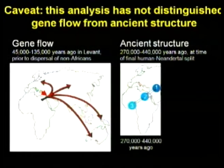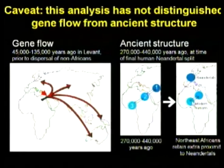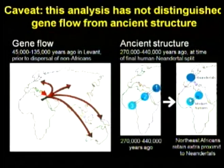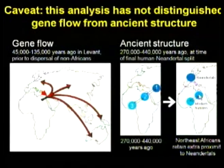And then what happened is population one went off and became Neanderthals a few hundred thousand years later. And populations two and three continued to exchange genes and then evolved into modern humans. But population two retained a little bit of extra proximity to Neanderthals, because it started out that way — not complete homogenization.